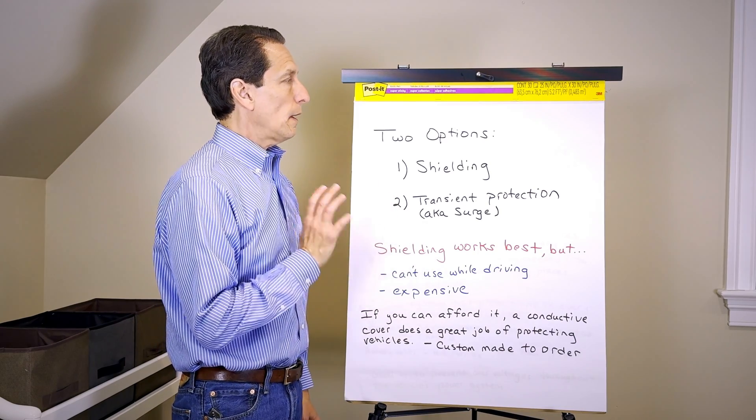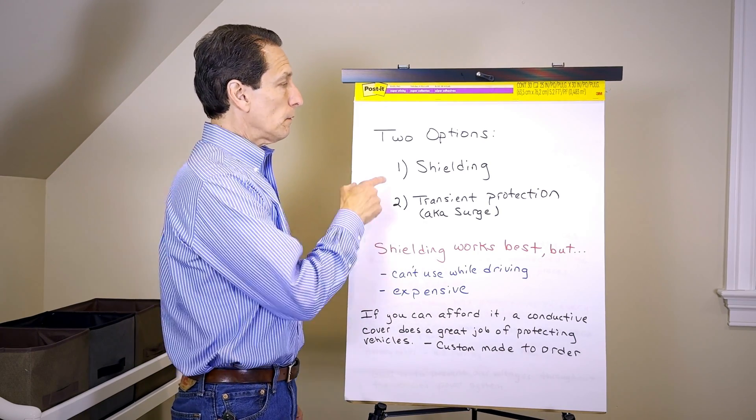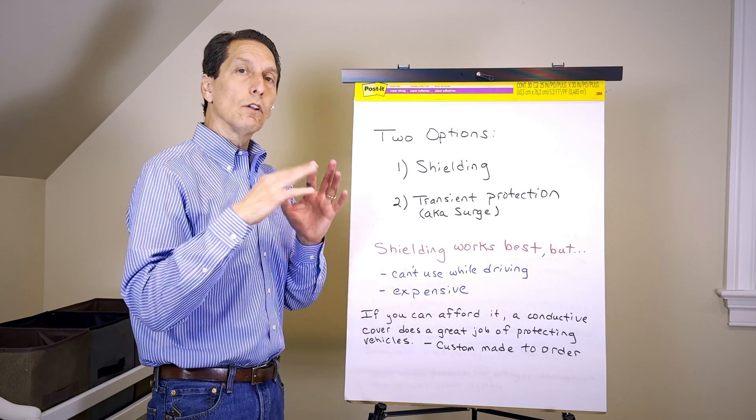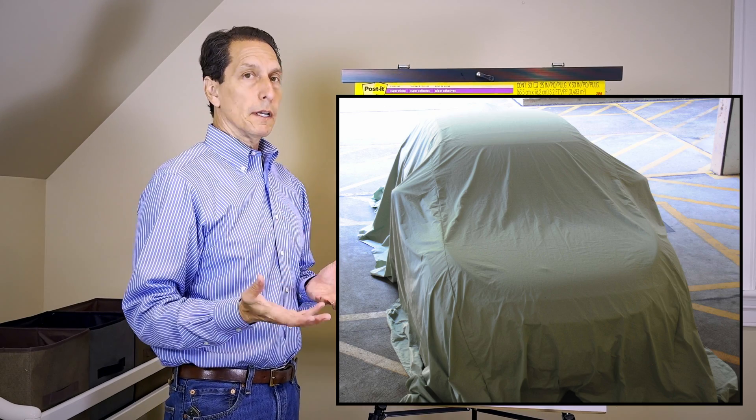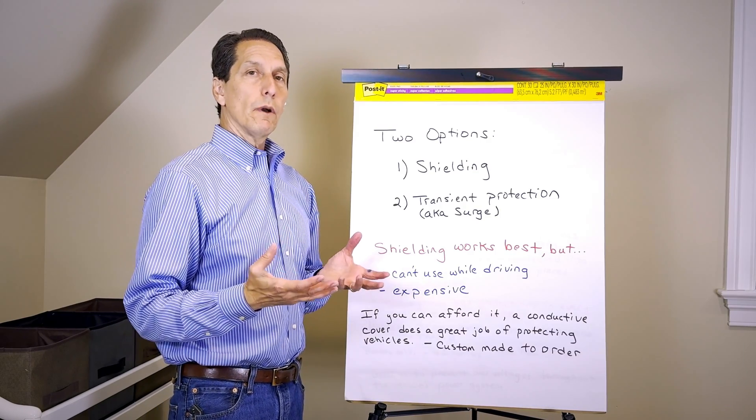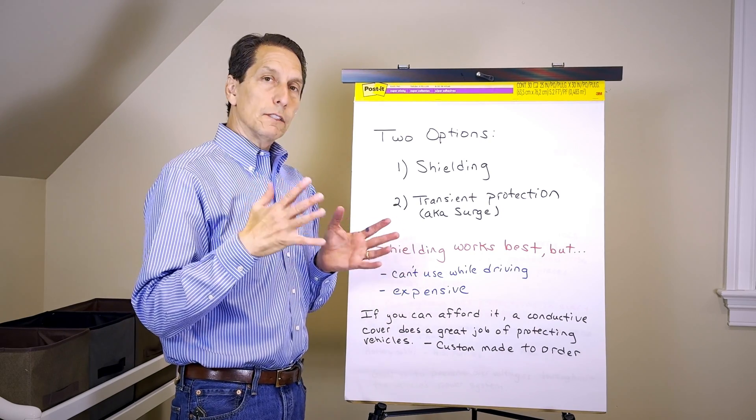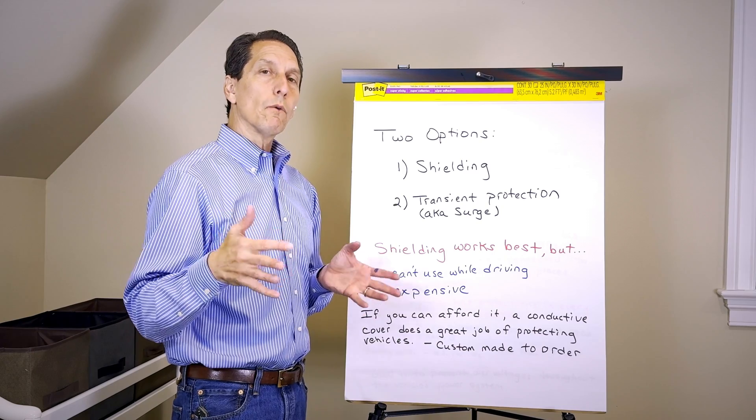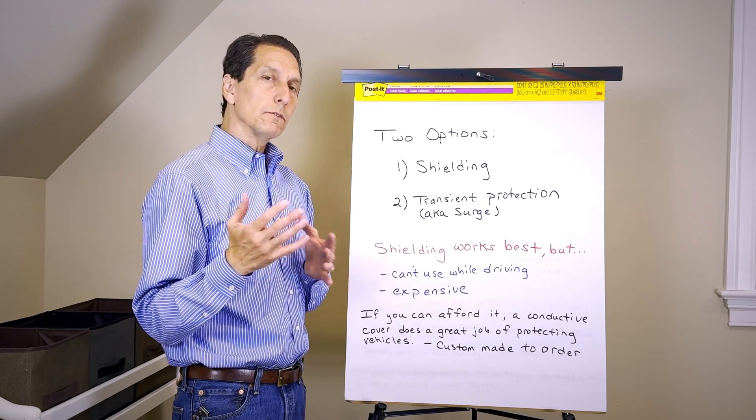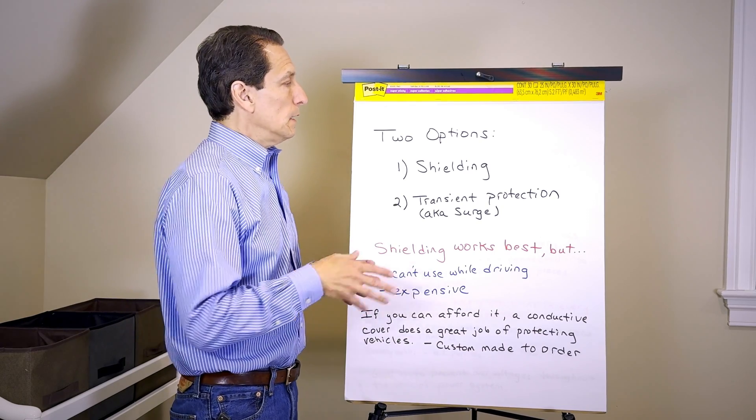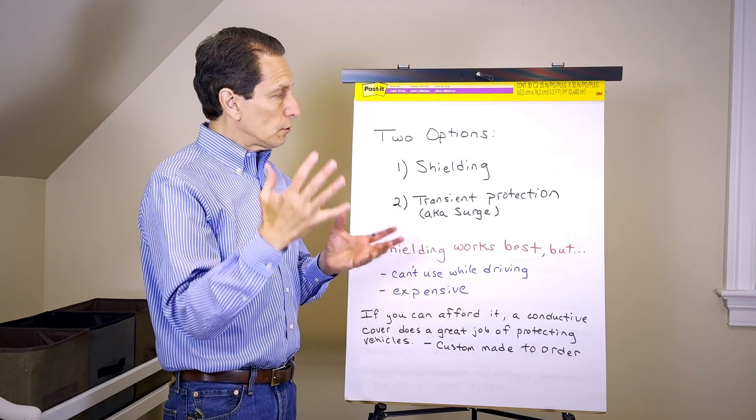There are two options for protecting your vehicle. The first is shielding, which is basically enclosing your vehicle in something conductive. As the radiated energy comes in from an EMP, it gets reflected off or absorbed by that conductive barrier, so it does a great job as long as you can fully enclose your vehicle.